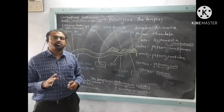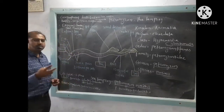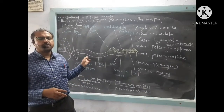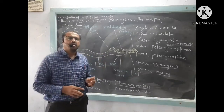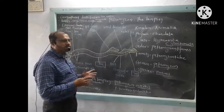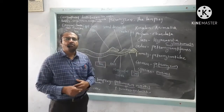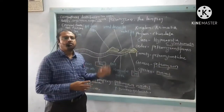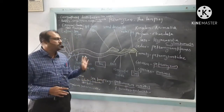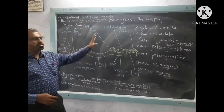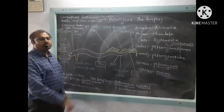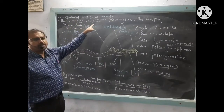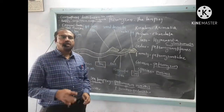Petromyzon sucks blood and lives as an ectoparasite — it externally attaches to the body of a healthy fish and sucks its blood. It is a primitive vertebrate, which makes it essential to study in order to understand vertebrate evolution. Petromyzon and Myxine are the only living members of the class Agnatha.